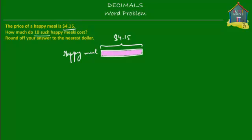So if one happy meal costs $4.15, then how much do 10 such happy meals cost? Very simple. They cost 4.15 times 10, right?